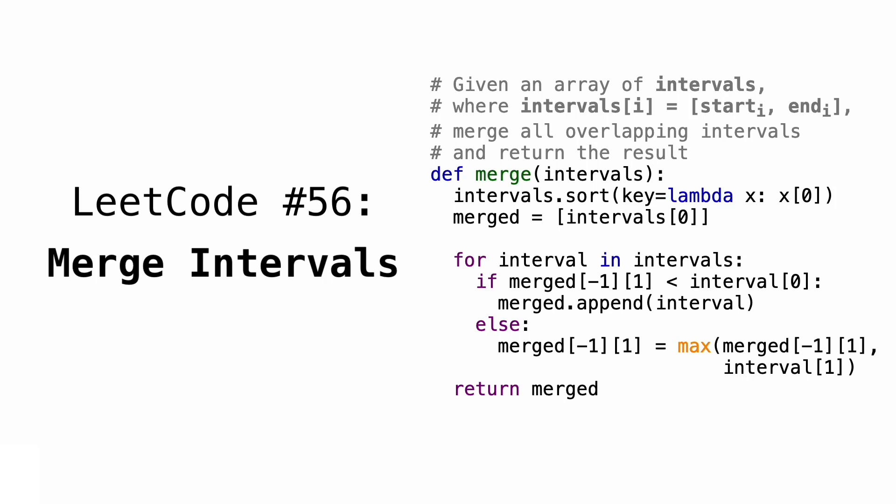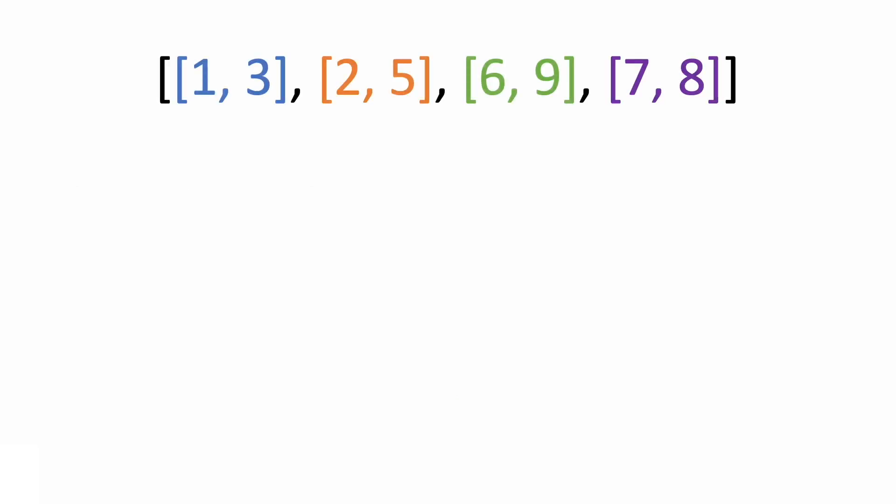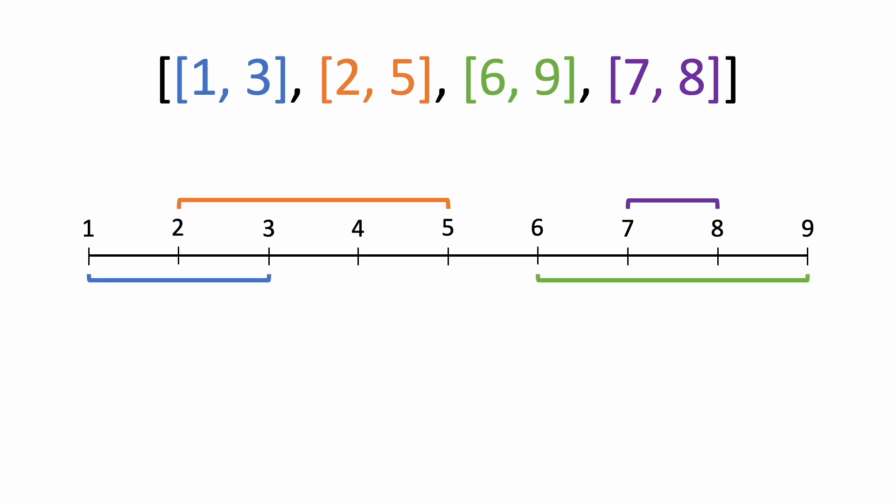For example, let's say this is the intervals array. If we visualize this on a number line, then this is what it looks like. We can see that the first two intervals overlap, so we would merge them into a new interval that starts at 1 and ends at 5.